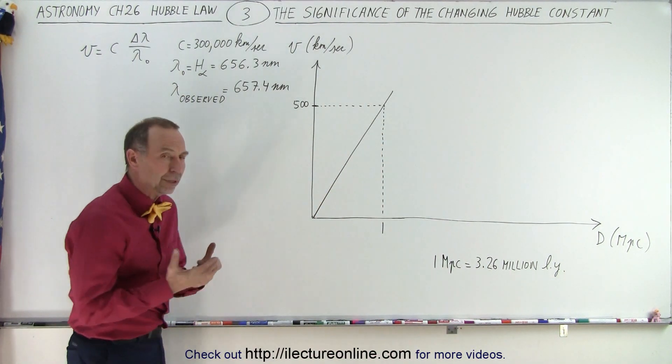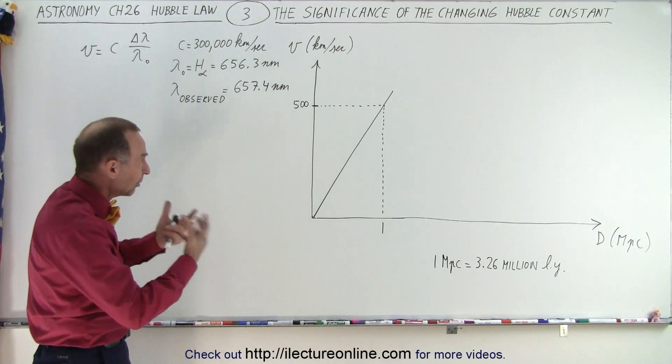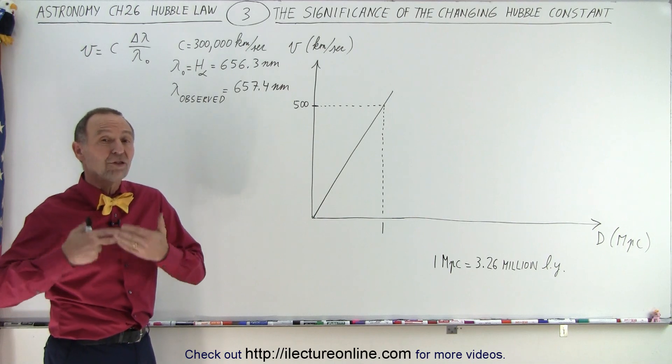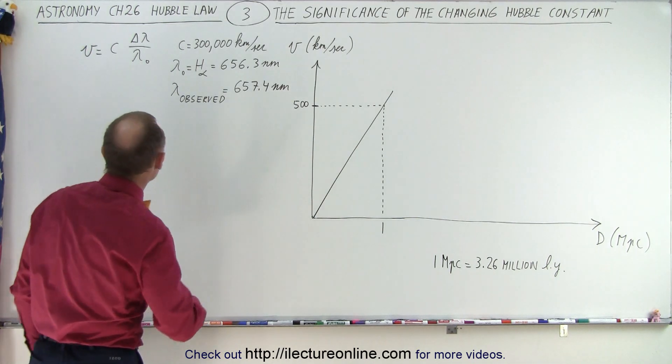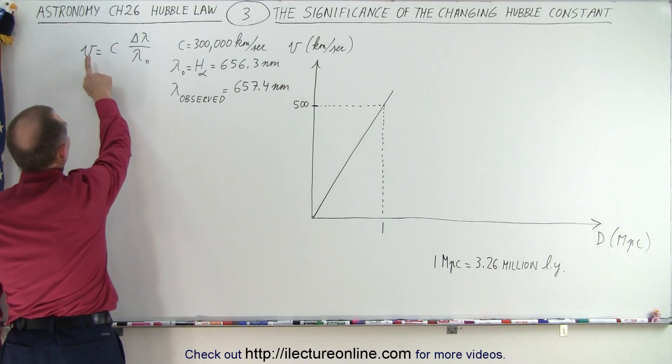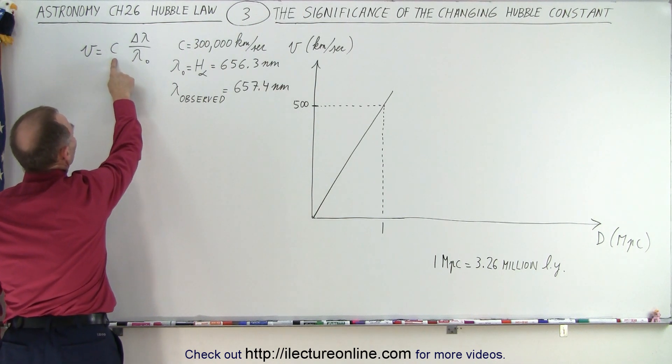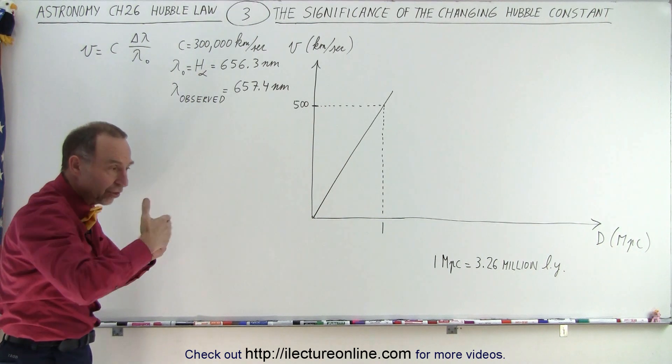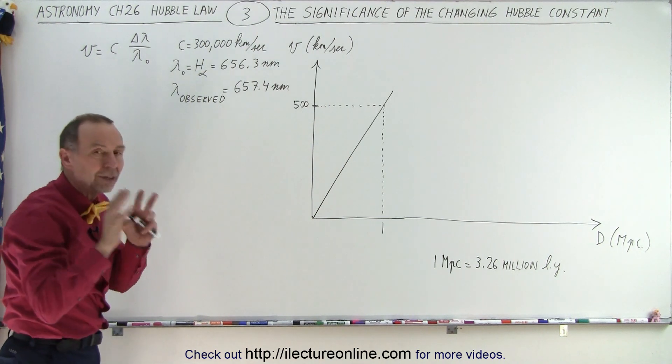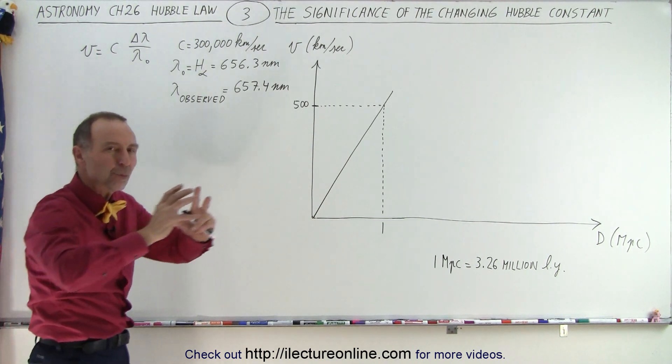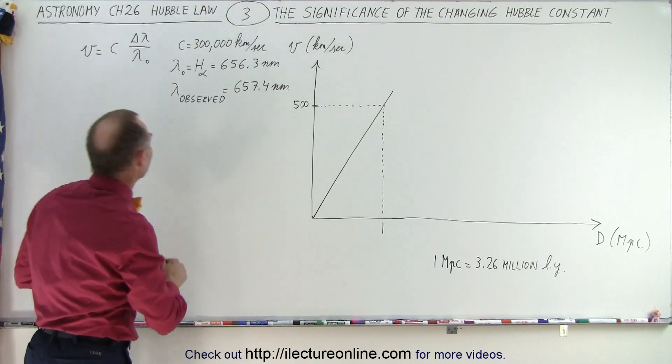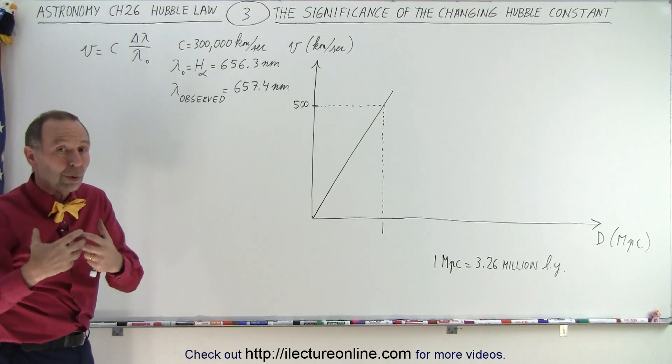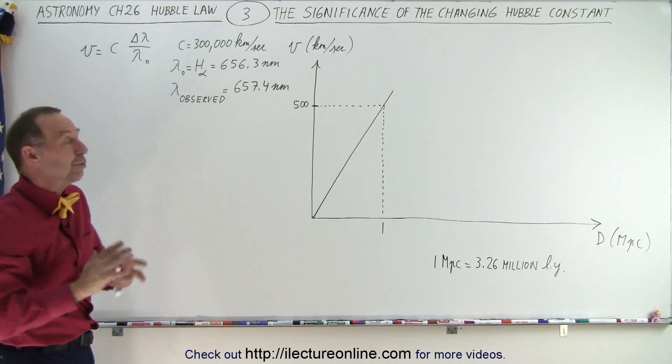So one megaparsec is 3.26 million light years away which is quite a distance. So how does it really work in astronomy? Well it's easy to figure out the speed at which things move away from us. We use this equation right here where the recessional velocity equals the speed of light times a change in the wavelength of the light that we look at.